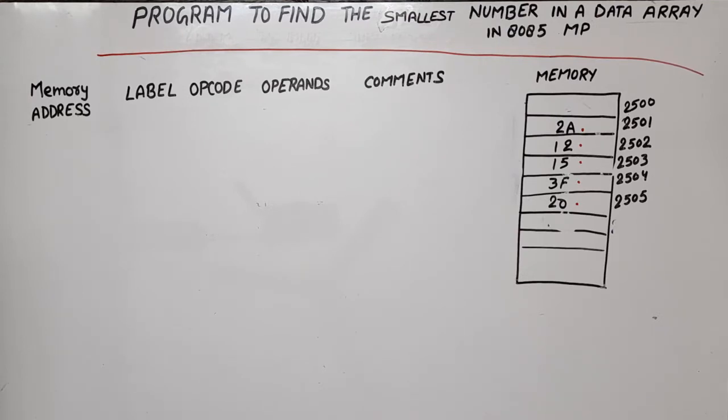How does this comparison process work? We assume whatever the smallest number is should be in the accumulator. I have taken the first number in the accumulator and the other numbers are on memory addresses. Now I compare 12 with 2A. Since 2A was greater than 12, we keep 12 in the accumulator.